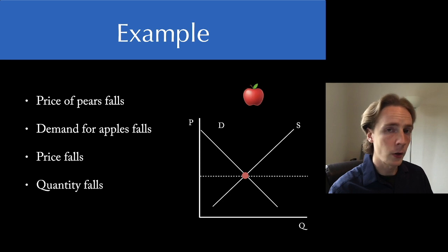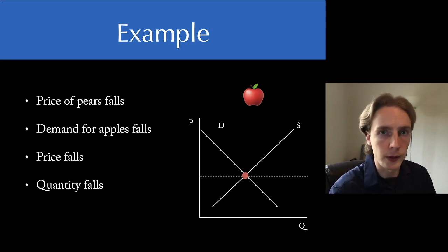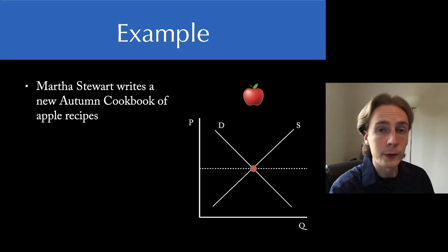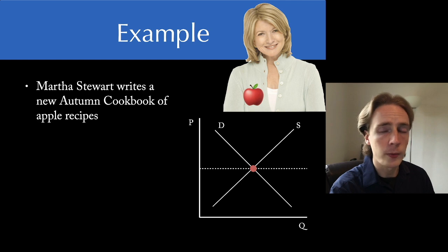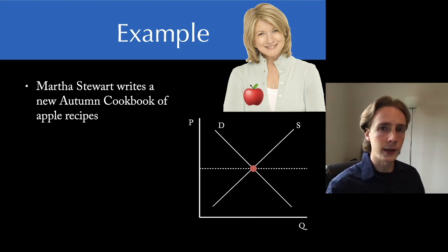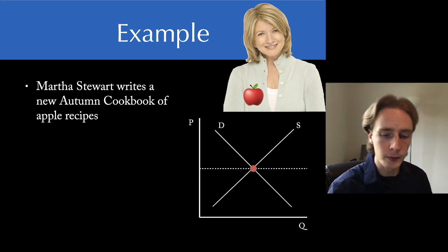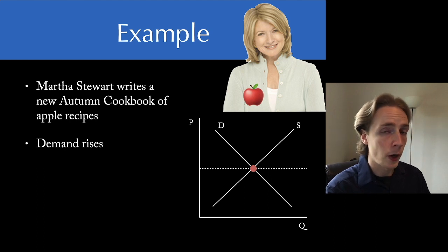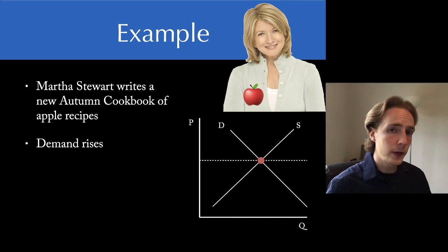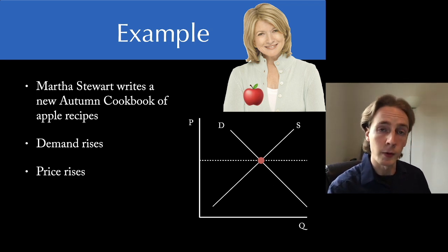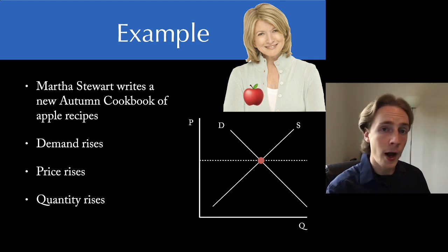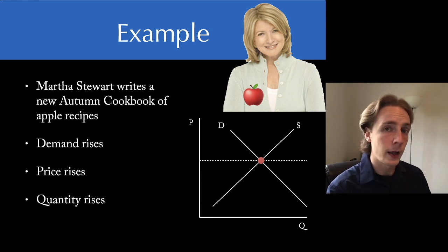How about this example: imagine Martha Stewart writes a new cookbook full of delicious autumn recipes that all use apples. It's a smash hit — everybody's trying to make apple pie and apple cider. This affects people's willingness to pay for apples regardless of the price. At any price, people are going to be willing to purchase more apples, so demand is going to rise. When demand rises, the price rises — apples become scarcer because people value them more. But also the quantity sold of apples increases. We move up the supply curve because at this higher price of apples, producers are willing to take land away from the pumpkin patch and start growing apple trees instead.